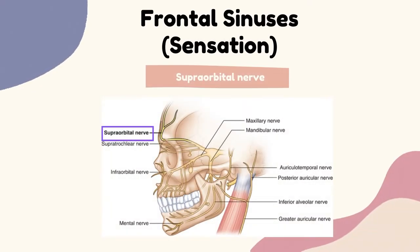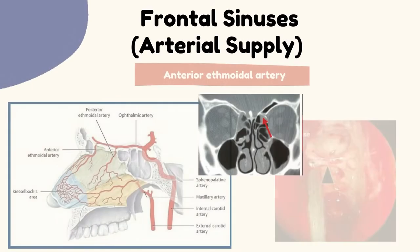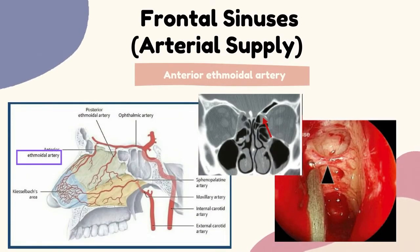There is also the supraorbital nerve, which is responsible for sensation of the frontal sinuses. It is a sensory nerve that brings sensation to the upper eyelid, forehead and scalp. Blood supply to the frontal sinuses is via the anterior ethmoidal artery, which branches from the internal carotid artery. I will now pass it to Serena to continue with the rest of the paranasal sinuses.